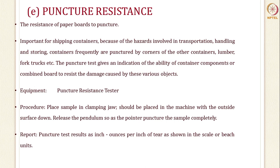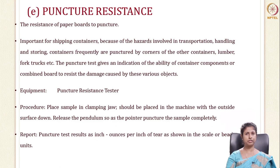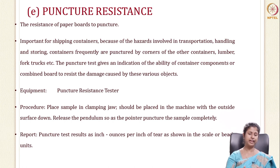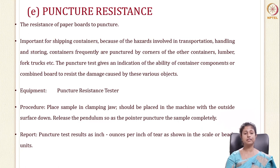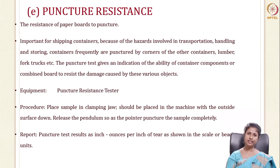The fifth test is puncture resistance. Similar to tear strength, puncture resistance is very important as a sharp object may be encountered during transit. It is an indication of the paper or container's ability to resist damage from sharp objects. The apparatus is called a puncture resistance tester. You clamp it in the jaw, place it in the machine, release the pendulum, which punctures it. The force required to puncture or create a tear is read directly from the scale and expressed as Beach units.